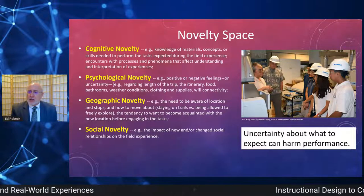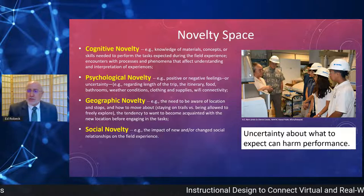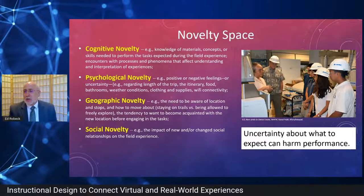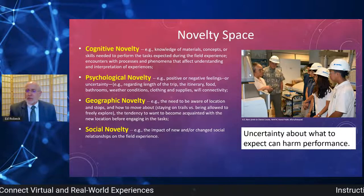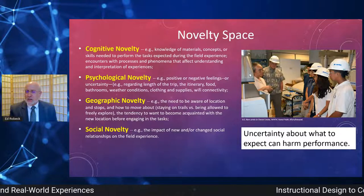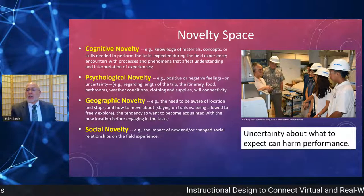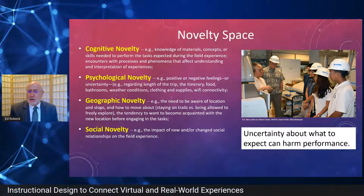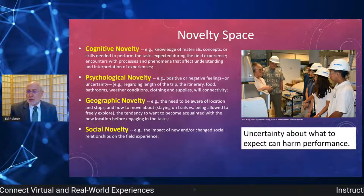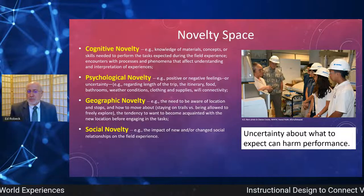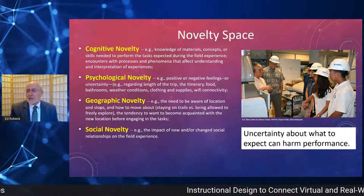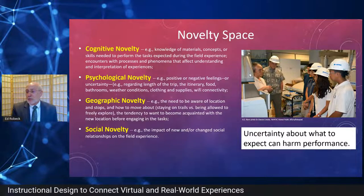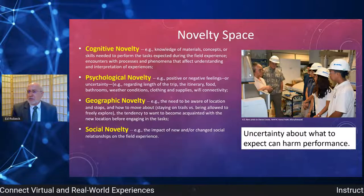Sometimes students go into a field experience not understanding enough and they feel inadequate, making them anxious — that uncertainty can undermine their learning. Psychological novelty involves not knowing enough about the place, what they'll be doing, or even where they'll be eating. These days, very important to many students: will they be able to use their smartphone and have Wi-Fi connectivity? Geographic novelty involves where the place is, whether they've been there, how far it is. Social novelty is what it'll be like, whether friends will be there, whether they'll know the people. All of these can affect learning.